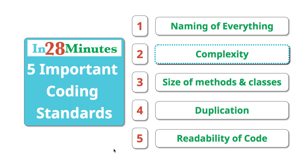The second important coding standard is complexity. How many conditions do you have in your code? How many conditions do you have in your method? Cyclomatic complexity is a great measure of finding out how complex your method is. And the more complex your method is, the more difficult it is to understand.